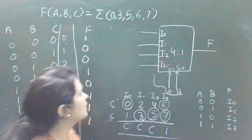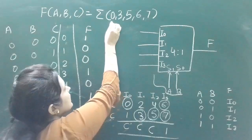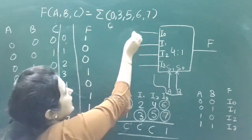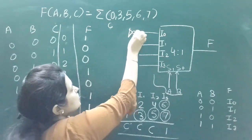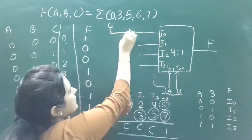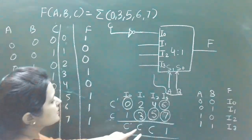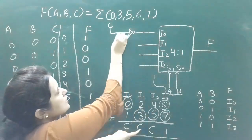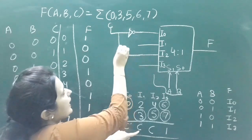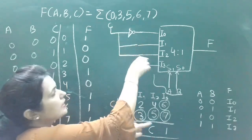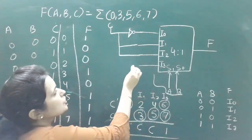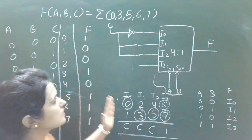So the final connections are: C-complement connected to I0, C connected to I1, C connected to I2, and 1 connected to I3. This is the final implementation of the Boolean function using the 4-to-1 multiplexer with A and B as selection lines.